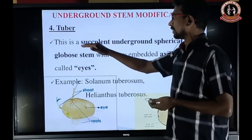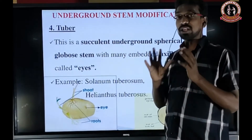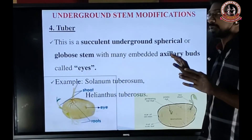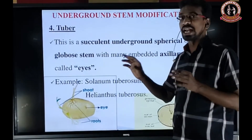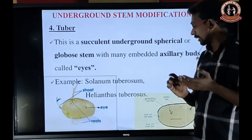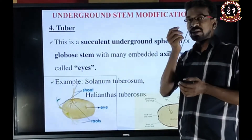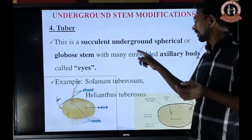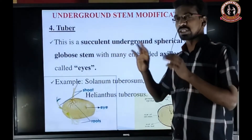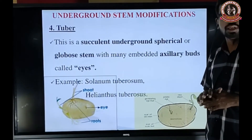The next type is the tuber. It is a circular, underground, spherical or globose stem with many embedded axillary buds called eyes. In potato, you can see green-like sprouts coming out from furrow regions — those are the axillary buds generally called eyes. Examples are Solanum tuberosum and Helianthus tuberosus.